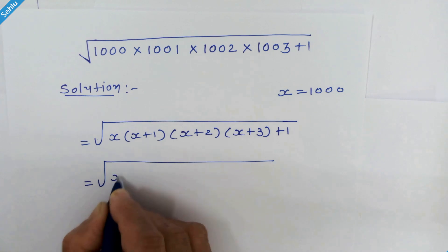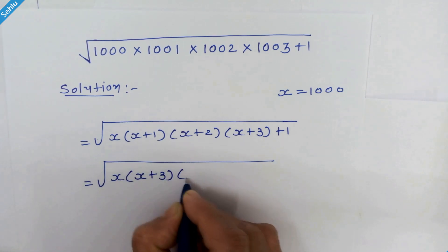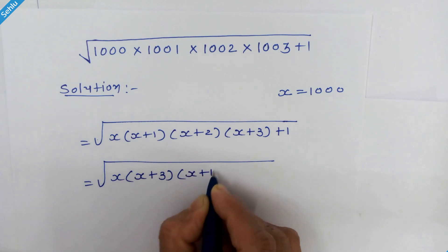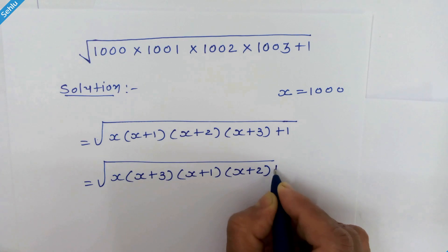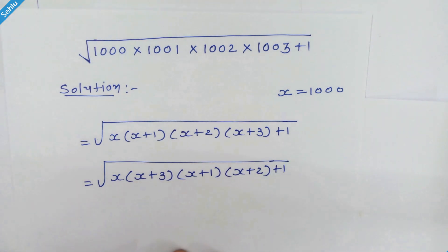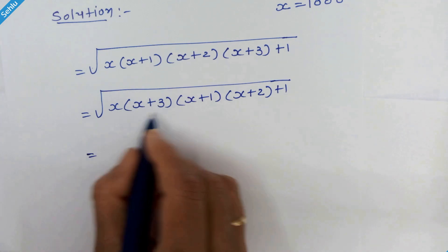So we have x times x plus 3, times x plus 1, times x plus 2, plus 1. Now in the next step, we will plug in this x with this bracket.